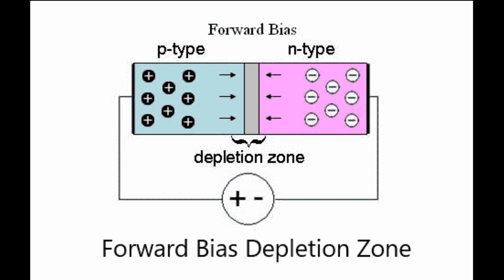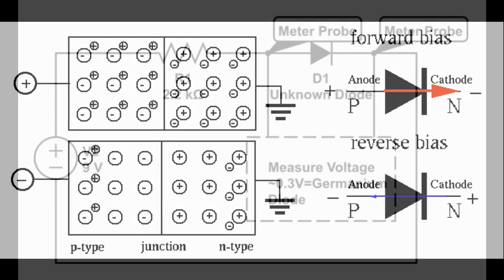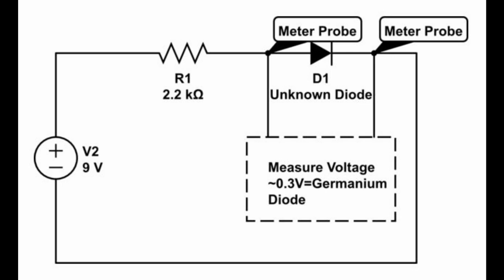For silicon-based P-N junctions, this potential is typically 0.6 to 0.8 volts. For germanium P-N junctions, the depletion zone gap requires about 0.2 to 0.4 volts to overcome it. Essentially, we have created a device that, when turned on, will conduct electricity in only one direction.